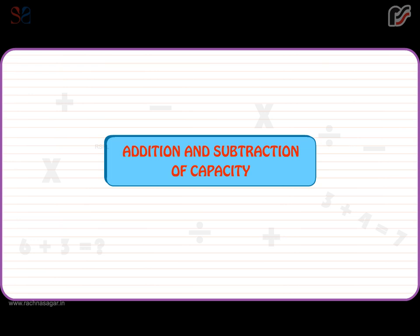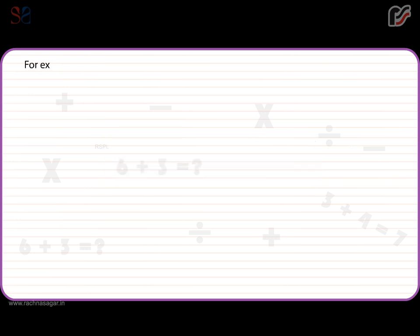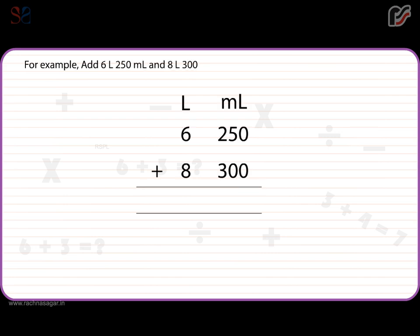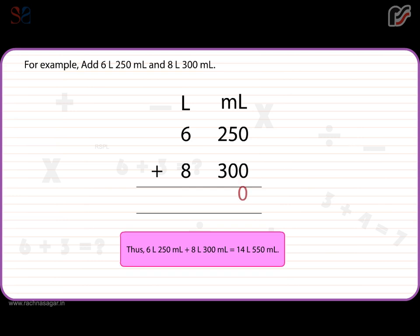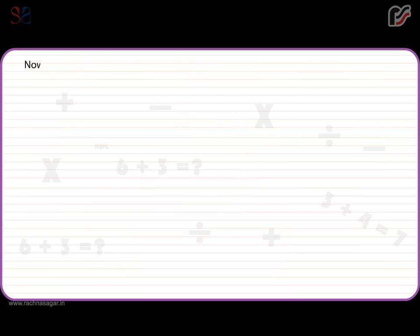Addition and subtraction of capacity. For example, add 6 litres 250 millilitres and 8 litres 300 millilitres. Thus, 6 litres 250 millilitres plus 8 litres 300 millilitres is equal to 14 litres 550 millilitres.